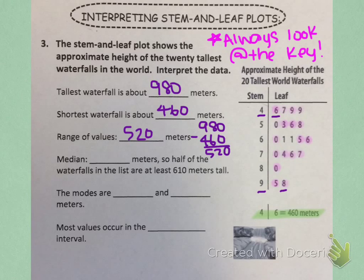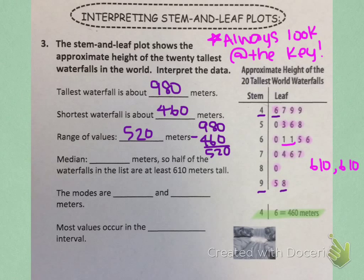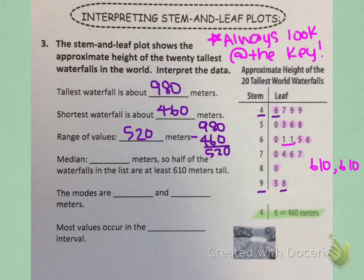Once I get to the middle, I see that there are two 1's. Looking at the stem, that's 600, and the leaf 1 is 10. So that means 610 and 610 are both at the middle of the list. The median is whatever number is smack dab in the middle of those two numbers. Since both values are the same, our median is 610 meters.